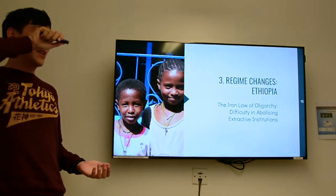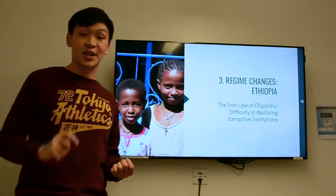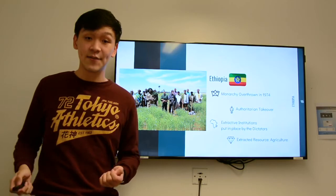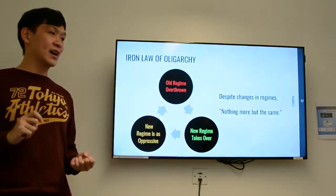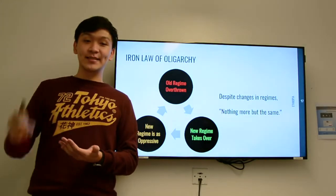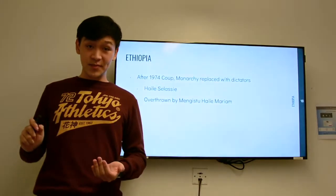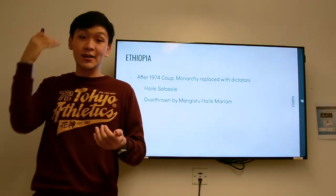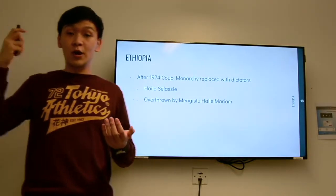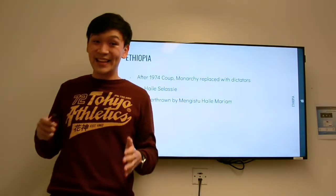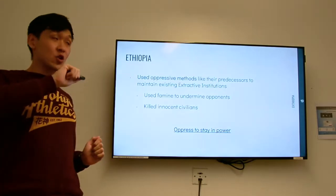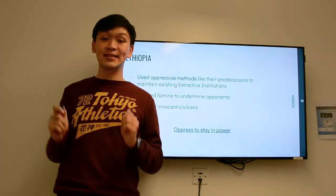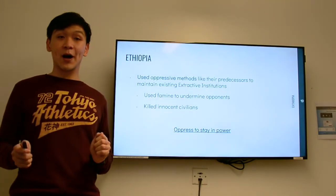The third example is Ethiopia, which answers the question of why it is so difficult to abolish extractive institutions. Even though Ethiopia had its monarchy overthrown in 1974, it faced the problem known as the iron law of oligarchy, where the new regime that took over was as oppressive as the previous one, and that did not allow economic growth. After the 1974 coup, the general who took over from Selassie was a dictator, and he himself was overthrown by Mengistu, who was equally oppressive and stagnated growth. So long as leaders had power and guns and used oppressive methods like their predecessors, they could stay in power, making extractive institutions difficult to overturn.